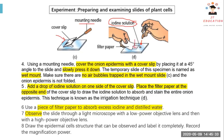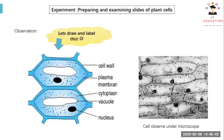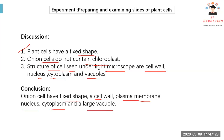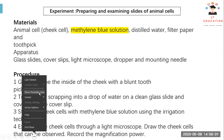Gently tap on the cover slip to remove any air bubbles. Now let's draw and label this. Our discussion: plant cell has a thick shape. What they observed — onion cell has no chloroplast. The structure of cells seen under the light microscope: cell wall, nucleus, cytoplasm, and large vacuole.